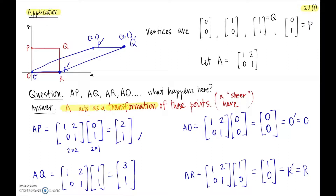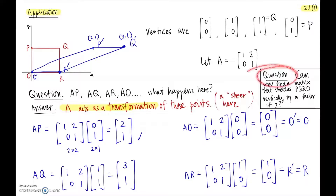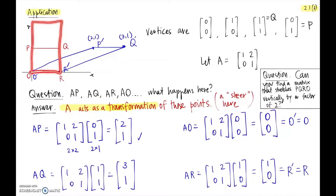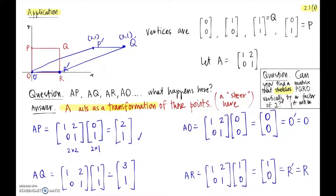We can say that matrix A acts as a transformation on all those points. This particular matrix happens to be a shear transformation. We see the beginnings of matrices as transformations — taking elements of a vector space and transforming them to a new place. A question to think about: can you find a matrix that stretches the original square by a factor of two vertically, turning it into a rectangle with vertices at (0,2) and (1,2)? This will be in the quiz.